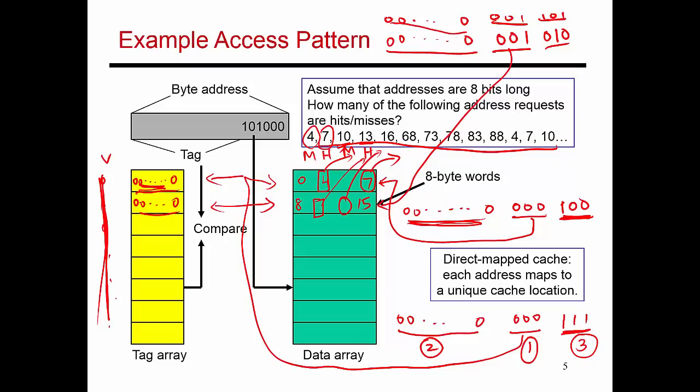Okay, and as you continue working through this example, you'll see that this next access is a miss. And then I bring in bytes 16 through 23 here. And so this is going to have tag bits 0.